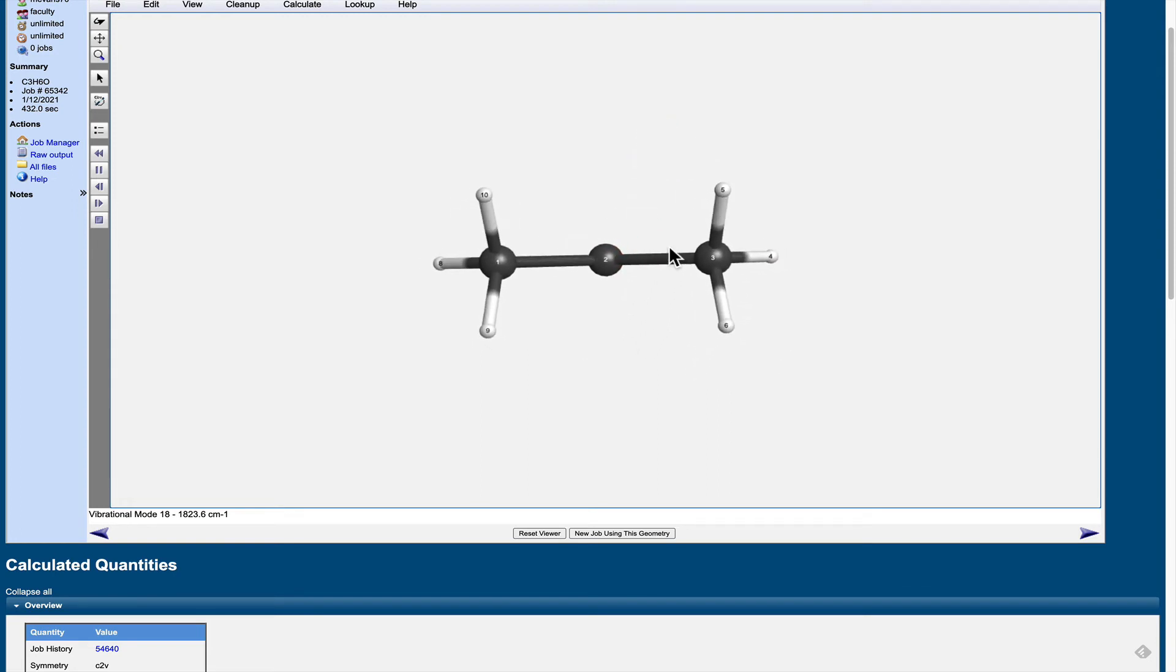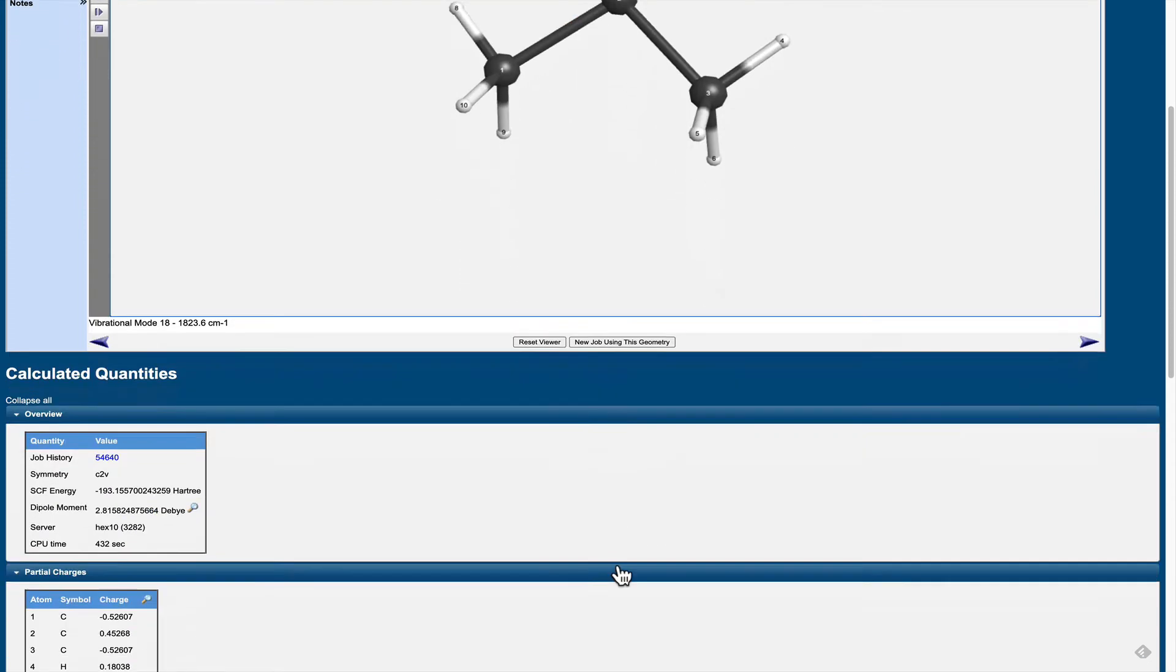So this molecule has a plane of symmetry that is right here perpendicular to the plane of the screen that's maintained as this vibration occurs. And that's going to be true of most vibrations. They will be symmetric or anti-symmetric with respect to the symmetry elements of the molecule.